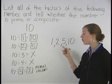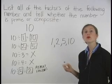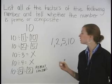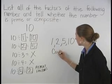Notice that 10 has 4 factors. When a number has more than 2 factors, it's called a composite number. So 10 is a composite number.